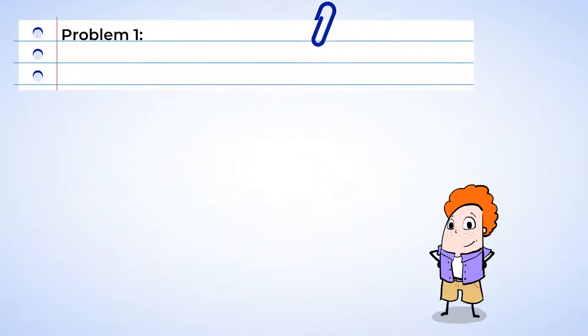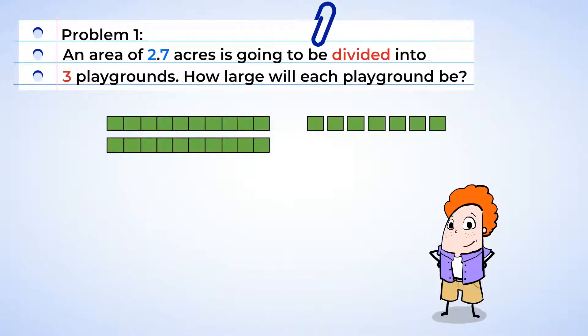Looks like the park next door is getting some work done. An area of 2.7 acres is going to be divided into three playgrounds. That's cool. There's going to be some new structures and maybe even a climbing wall. We need to help the workers decide how big each playground will be. Well, that's no problem.